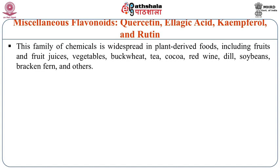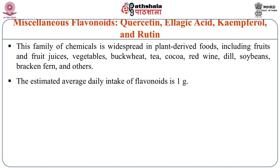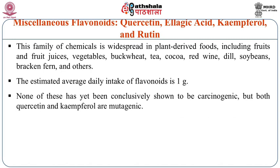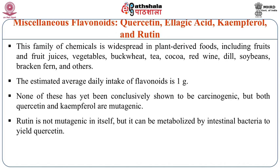Other miscellaneous flavonoids include quercetin, ellagic acid, kaempferol and rutin — a family of chemicals widespread in plant-derived foods including fruits, fruit juices, vegetables, buckwheat, tea, cocoa, red wine, dill, soya beans, bracken fern and others. The estimated daily average intake of flavonoids is roughly around 1 gram. None of these chemicals have yet been conclusively shown to be carcinogenic, but both quercetin and kaempferol are reported to be mutagenic. Rutin is not mutagenic by itself but can be metabolized by intestinal bacteria to yield quercetin, which has some anti-carcinogenic properties.